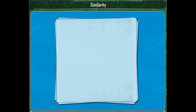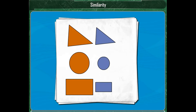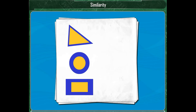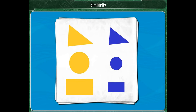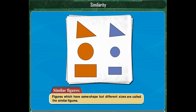Similarity. Look at these figures. Are they exactly the same? No. Their shapes are the same. Then in what way do they differ? They differ in sizes, though the shapes are exactly the same. Figures which have the same shape but different sizes are called similar figures.